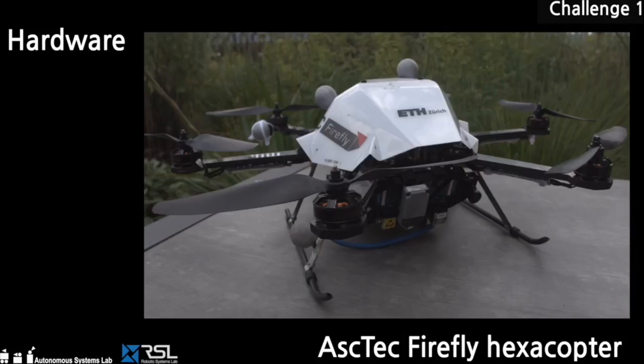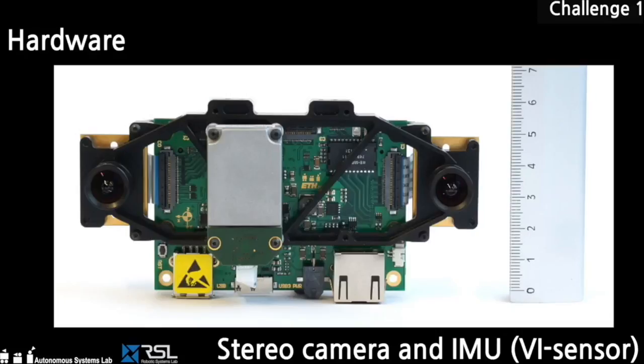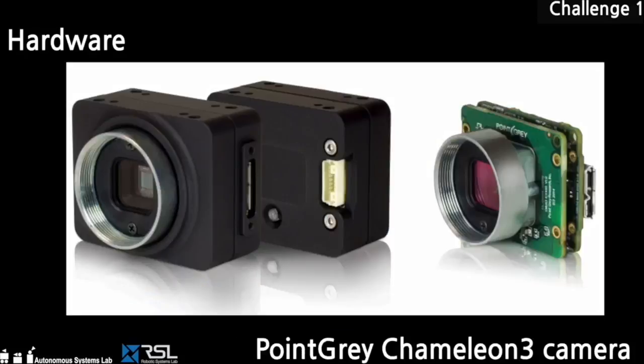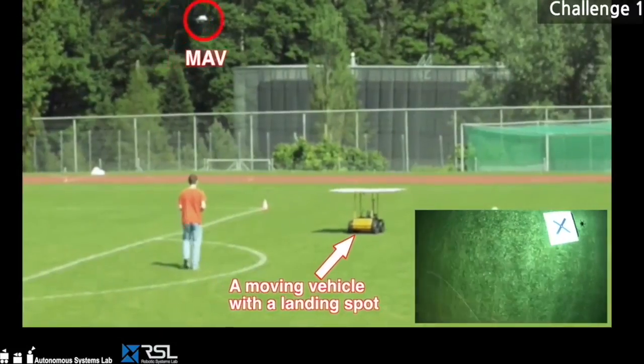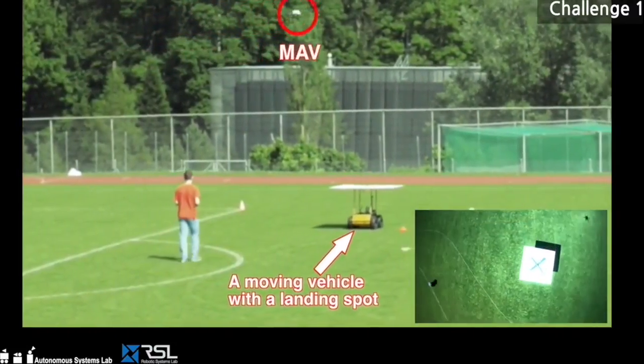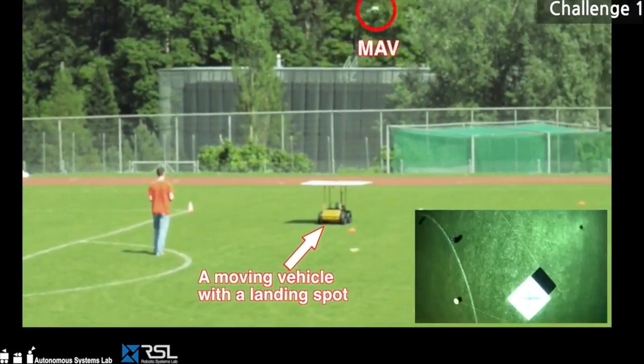The hardware employed in Challenge 1 consists of an Ascending Technologies Firefly Hexacopter equipped with stereo camera and IMU and RGB camera for platform detection. Multiple experiments have been carried out in the field and in lab environments to validate our approach.